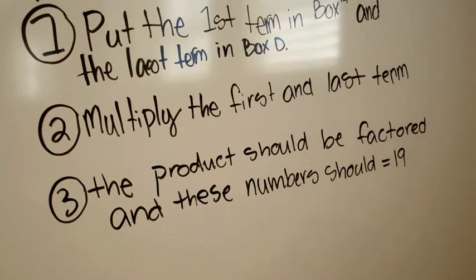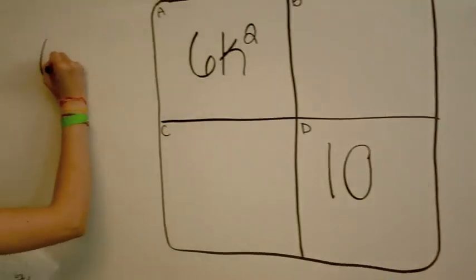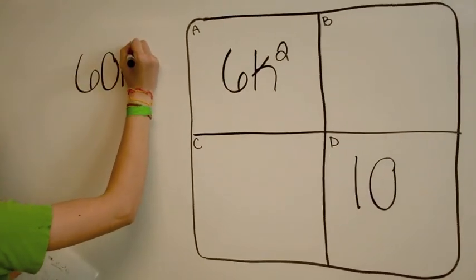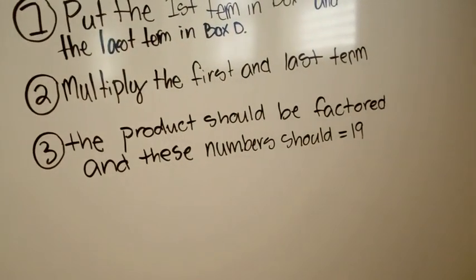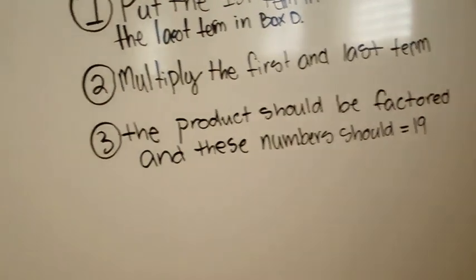Multiply the first and last term. The product should be factored and these numbers should equal 19.